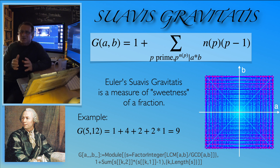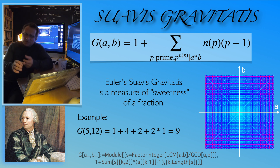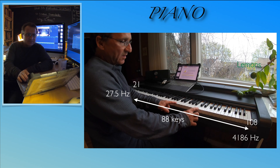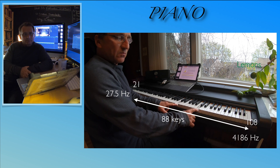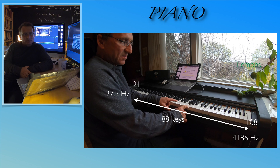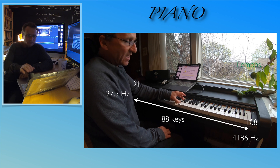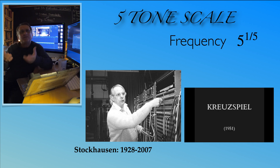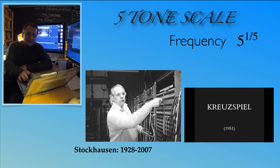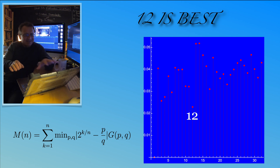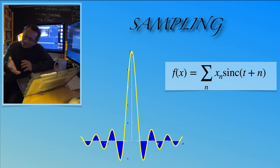The gratus suavitatis is an interesting function — it changes in a strange way because of number theory. Some frequency ratios sound good, like 2:1, and some don't. The value is bad for certain ratios; the musician Stockhausen even invented his own scale using the fifth root of 5. There's a reason why 12 is the best number of tones, related to how the 12th roots of 2 are very close to rational numbers.